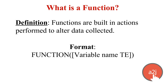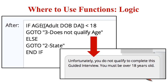The next section covers functions. Functions are built-in actions performed to alter data collected. The format is: the function name in all caps (such as AGE, SUM, DOLLAR), then your variable name wrapped in brackets inside parentheses. There are two places in A2J Author you can use functions. The first and most common is in the logic section. For example, in a logic statement you can test whether a date of birth converted to an age is less than 18 — if so, the end user is taken to a screen explaining they don't qualify; otherwise, they proceed to the next questions.